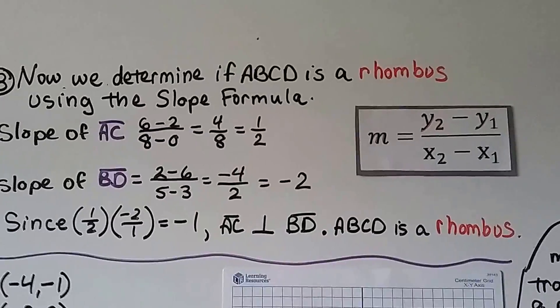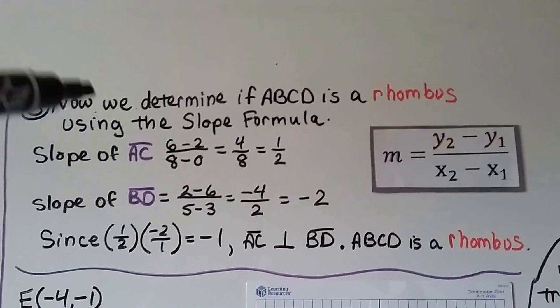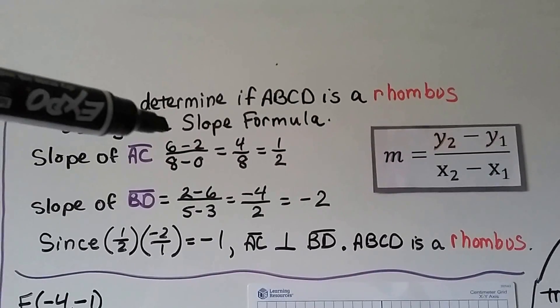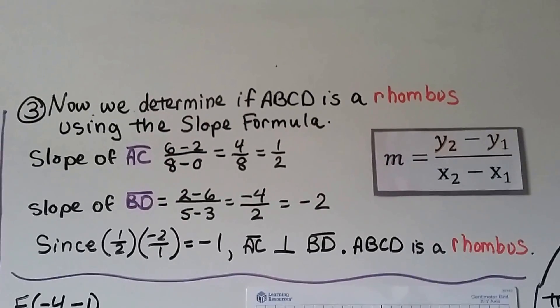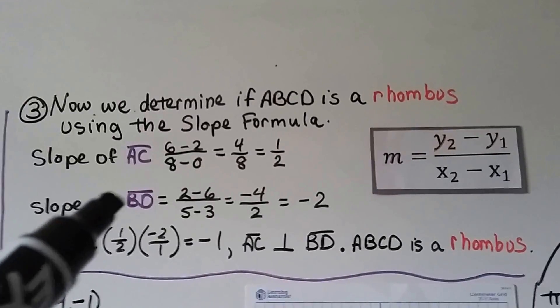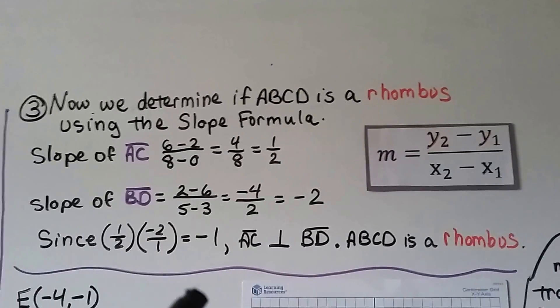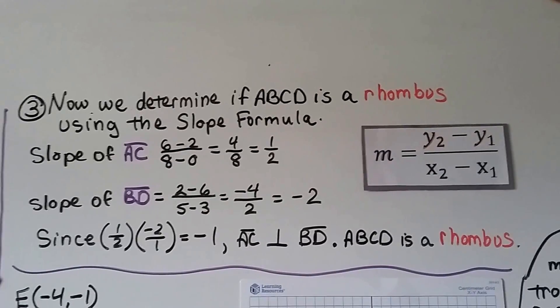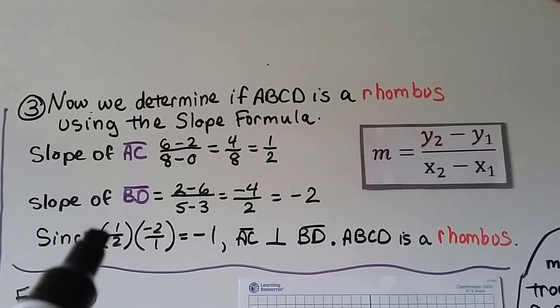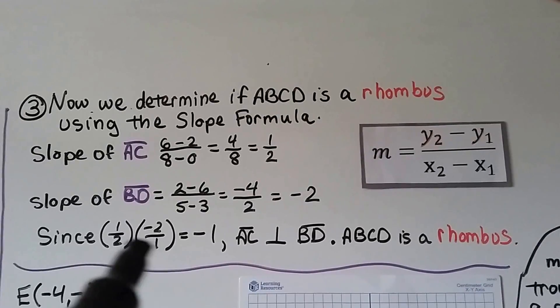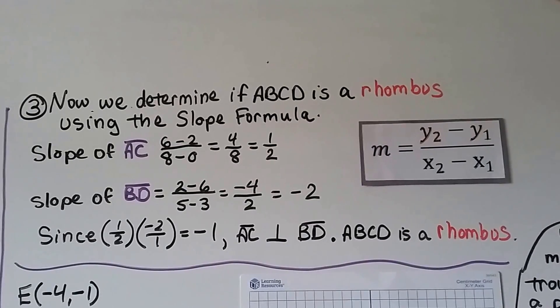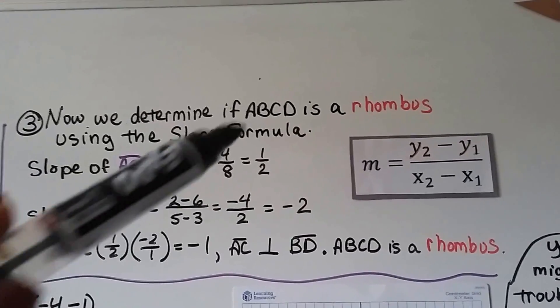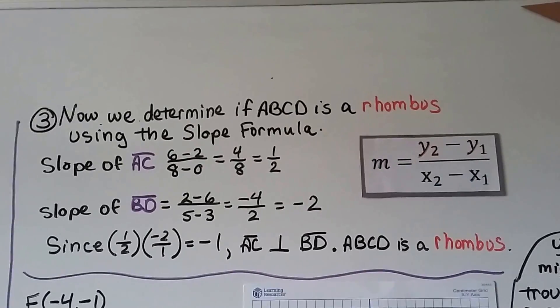But now we need to determine if ABCD is a rhombus. So, using the slope formula, we put in our x and y values for A and C, and we get 6 minus 2 over 8 minus 0. That's going to give us a 1/2 slope for AC. And for segment BD, we get 2 minus 6 over 5 minus 3. That's going to give us a negative 2 slope. And what we do is we multiply that 1/2 by that negative 2, to equal negative 1. Segment AC is perpendicular to segment BD because it equals negative 1 when we multiply their slopes. So ABCD is a rhombus.